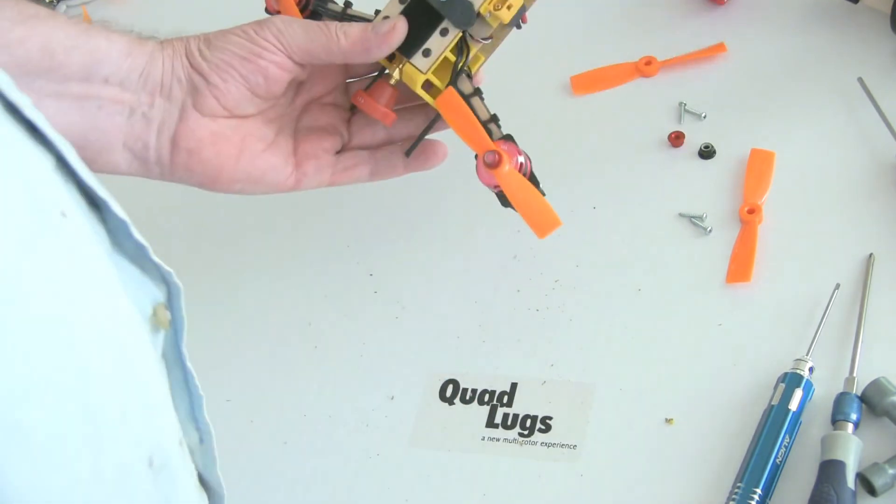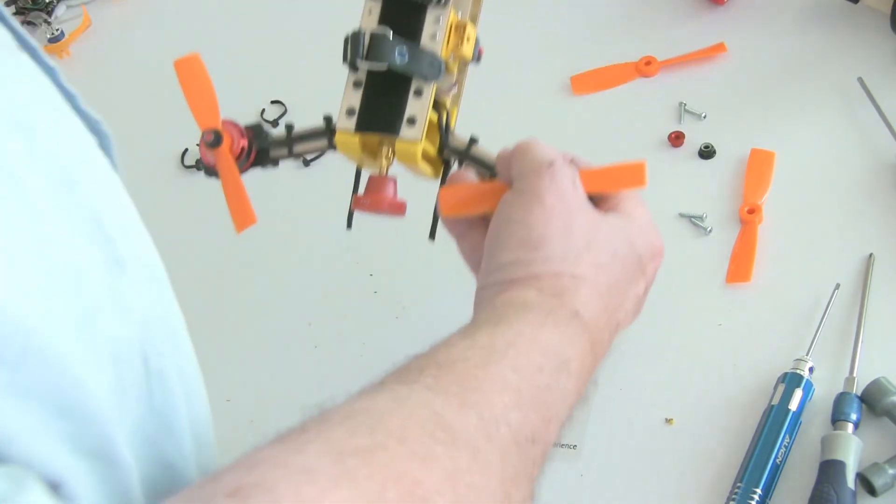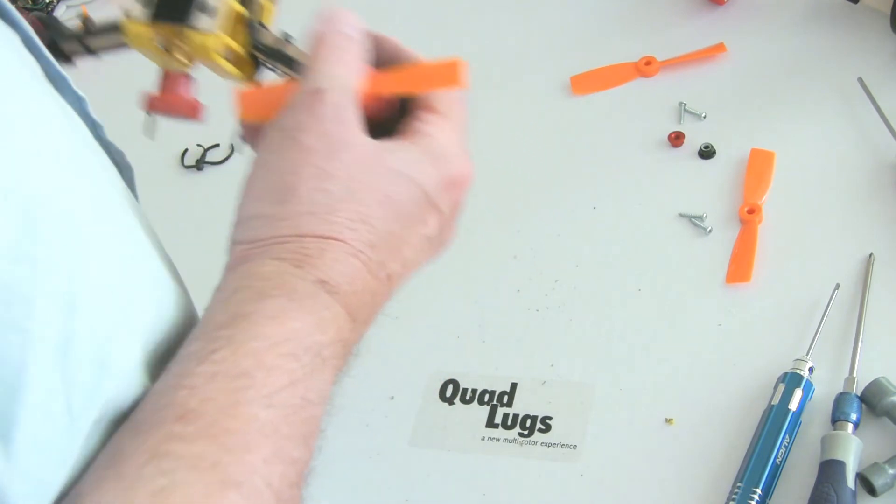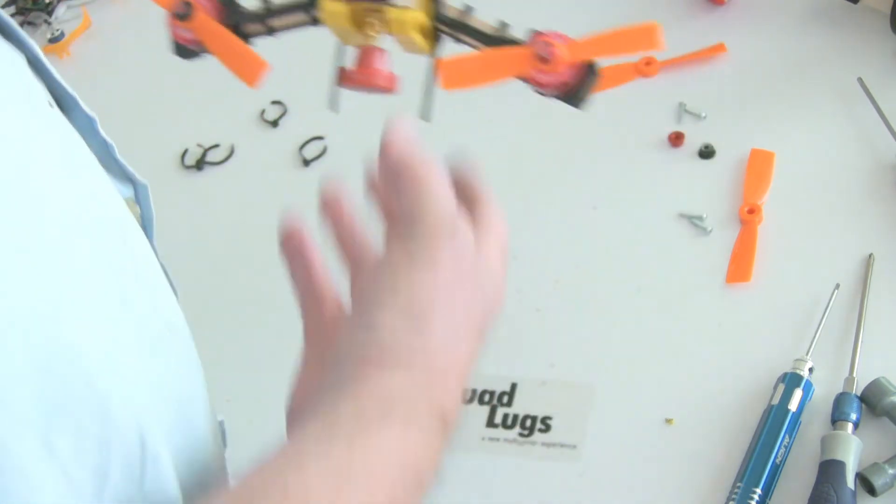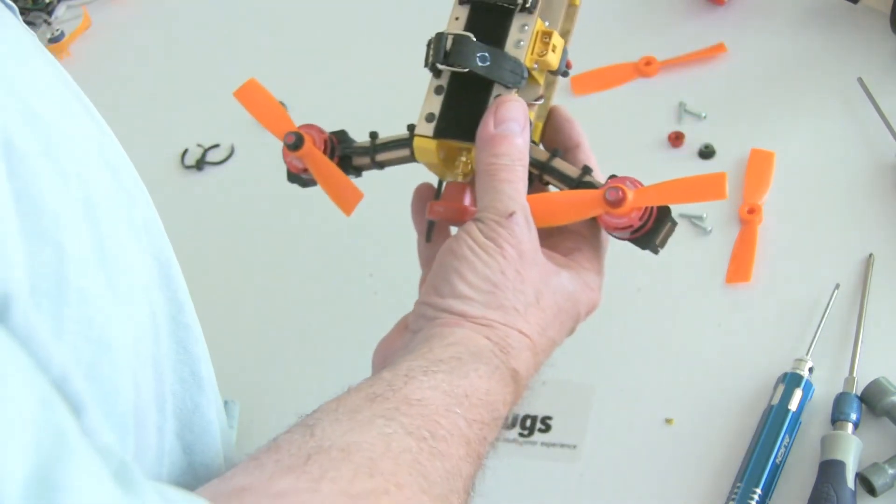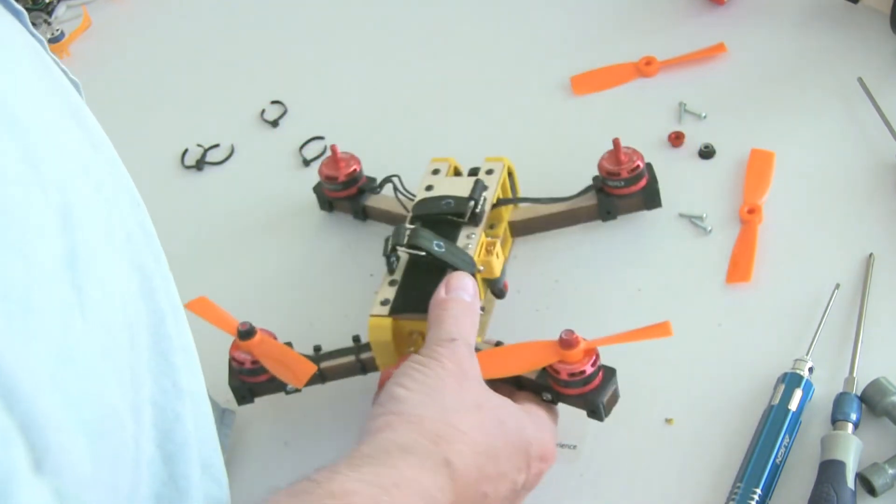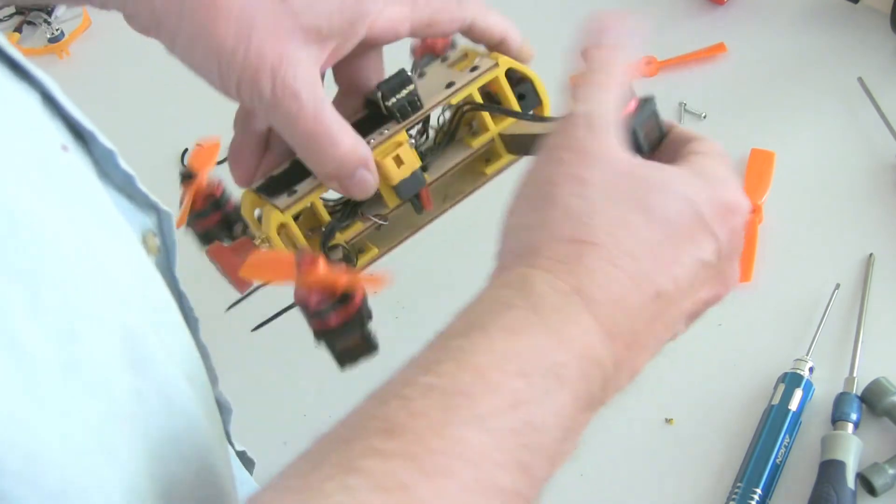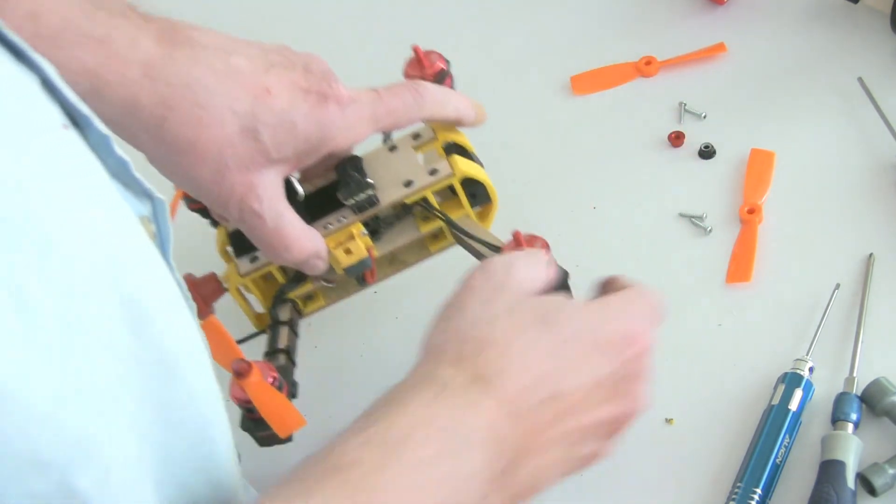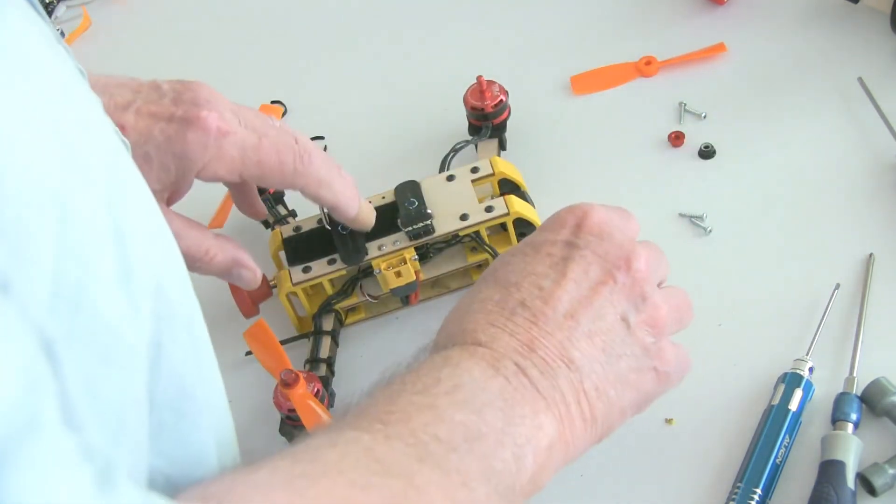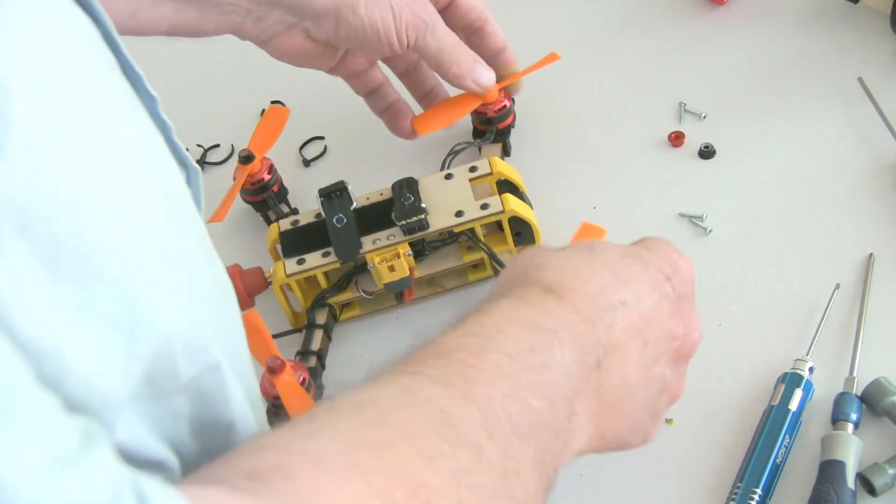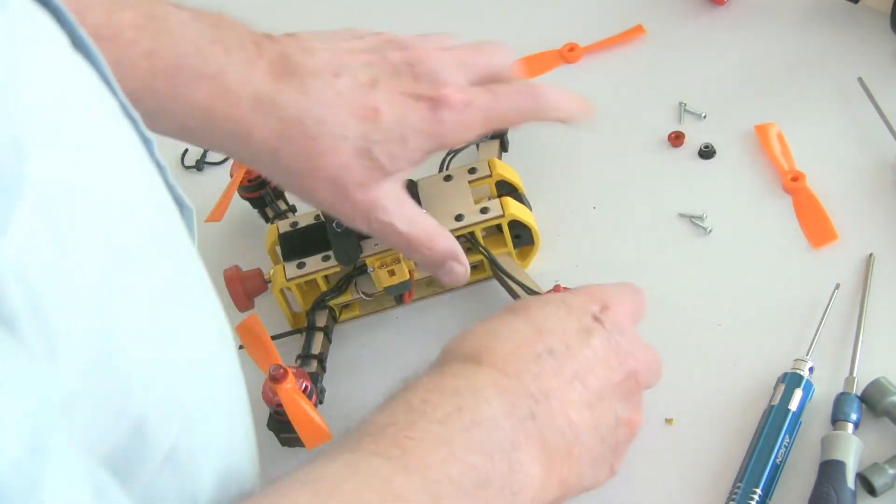This is it. This is putting it back on, as I guess you would call it the conventional. Well, I may be off a little bit on that, but I don't think so. Anyway, I just need to put these screws back on here. And then the props. So let me get that done.